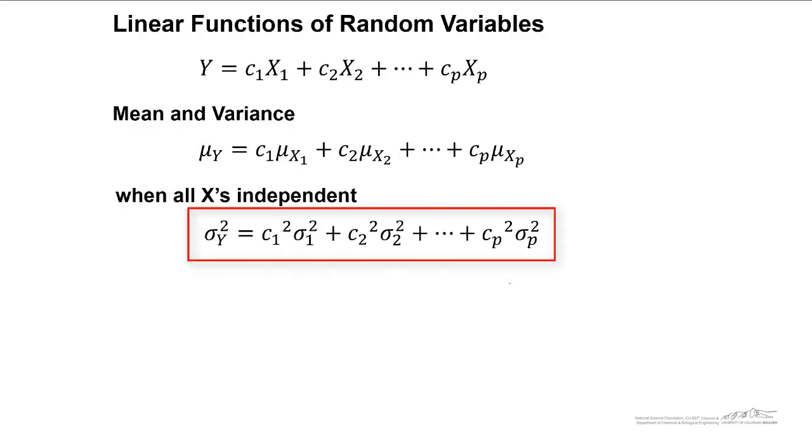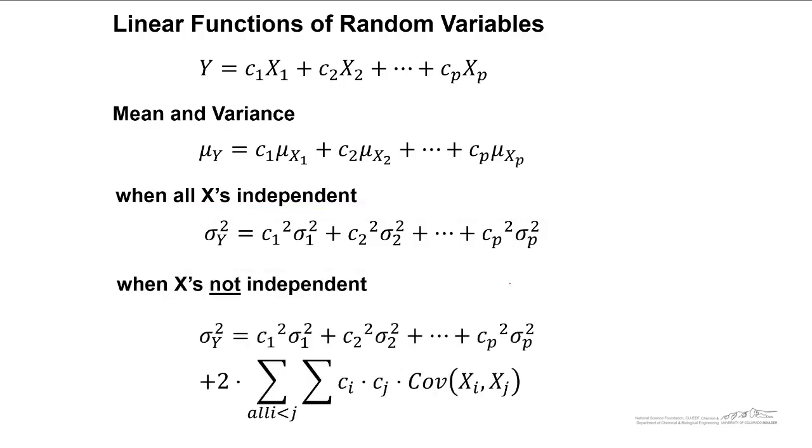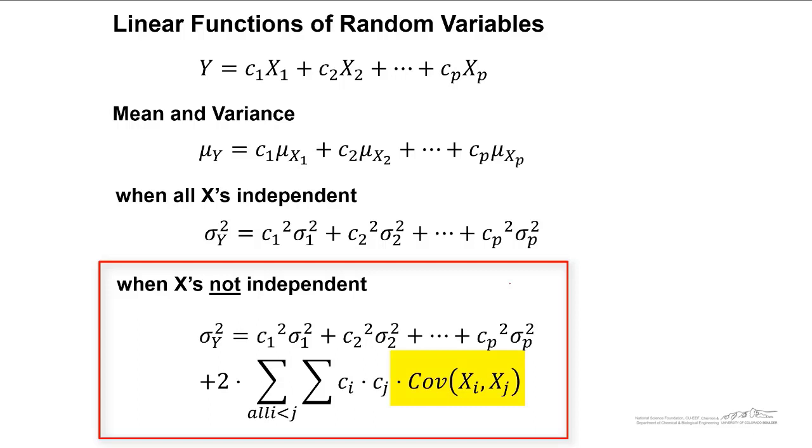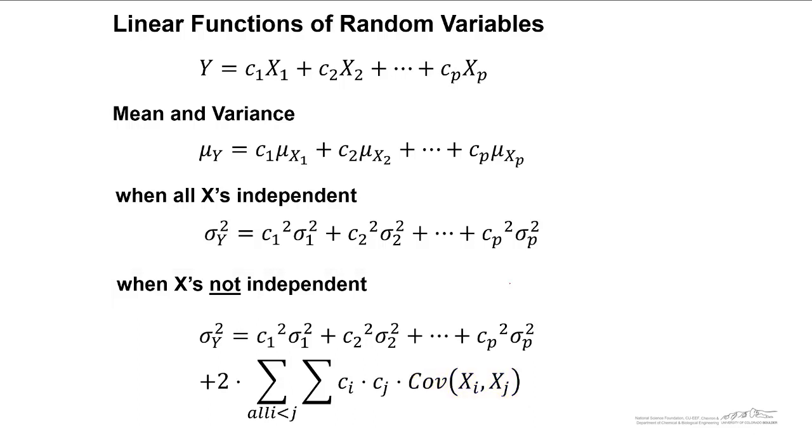The variance is a little bit different because we have to square those constants. So the variance of y is equal to c1 squared times the variance of x1 squared and so on, and it's a linear combination. By the way, we're not going to talk too much about this, but if the x's are not independent, then you would have to include the covariance here. For the most part in this class, we're going to be considering linear combinations, and they're independent.